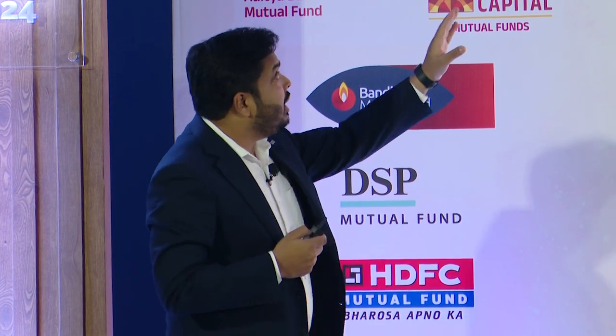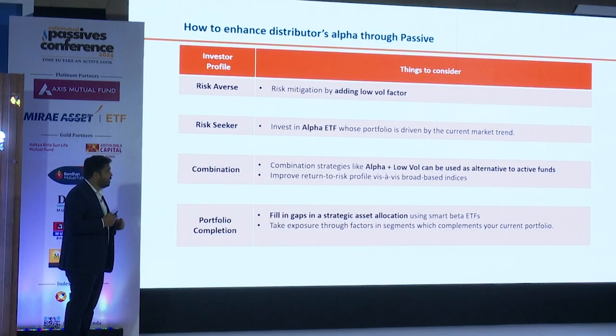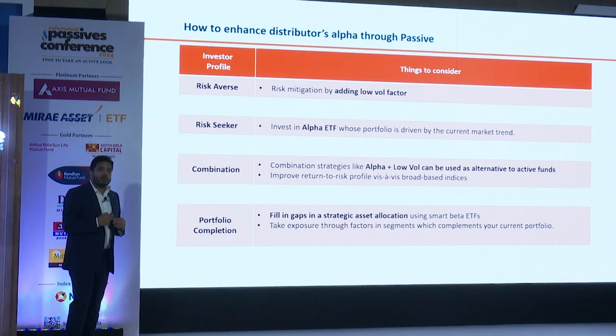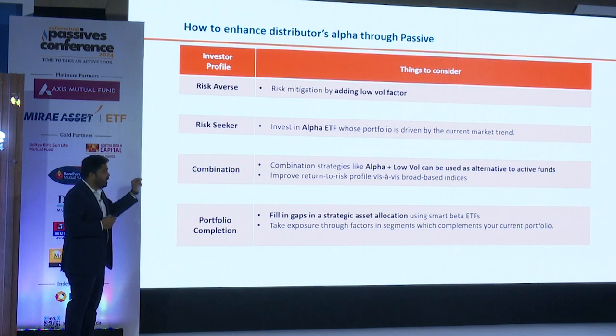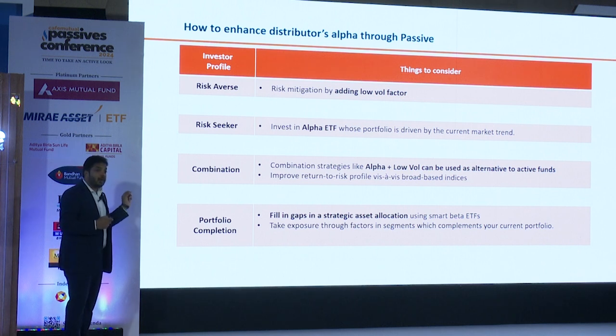And that is where, as advisors and MFDs, we should also graduate — move on from Nifty 50 and Sensex, talk about smart beta, talk about exotic products, talk about products which are not there on the active side or the PMS side. This is how you can basically target increasing alpha through passive. If your investor is risk-averse, add low vol after doing investor risk profiling. If he is a risk seeker, add alpha or momentum. If he does not want to invest in large cap, possibly a combination of low vol and alpha is a good solution.